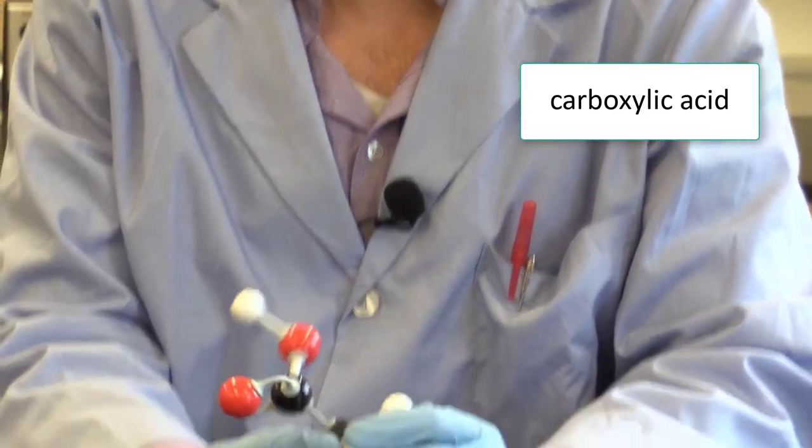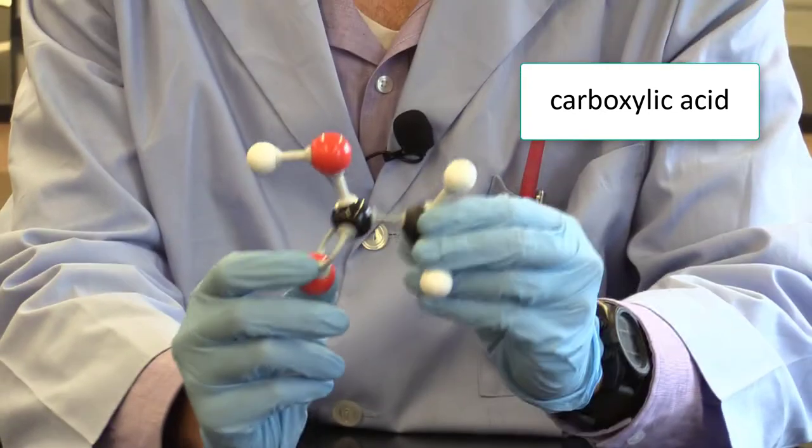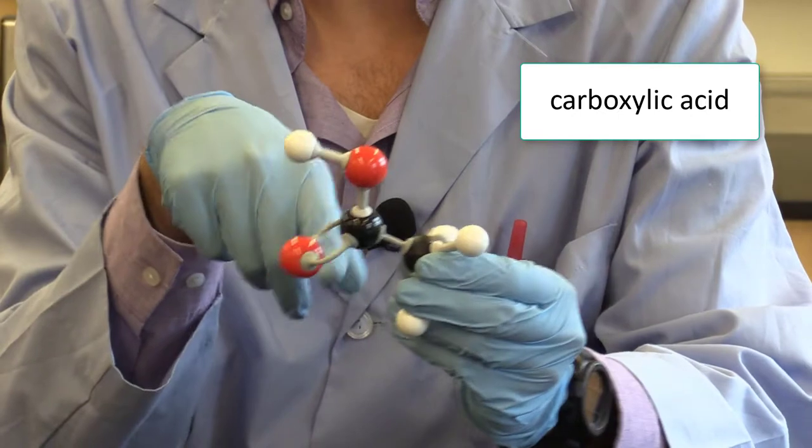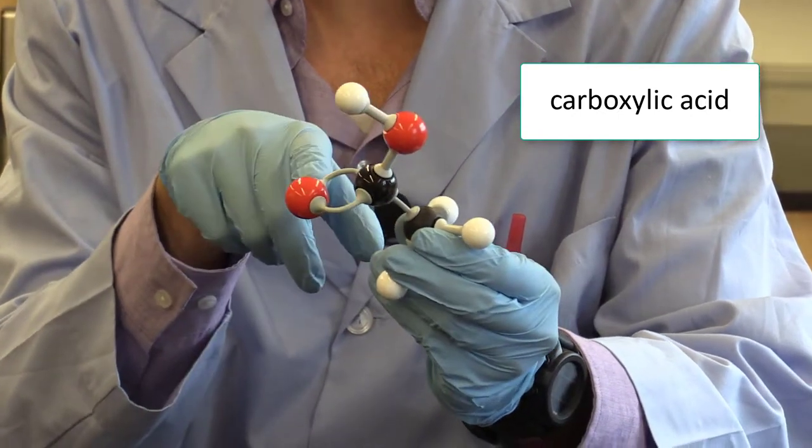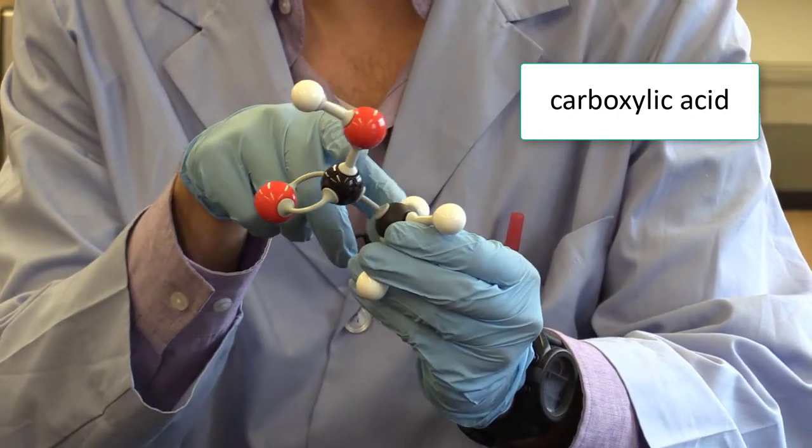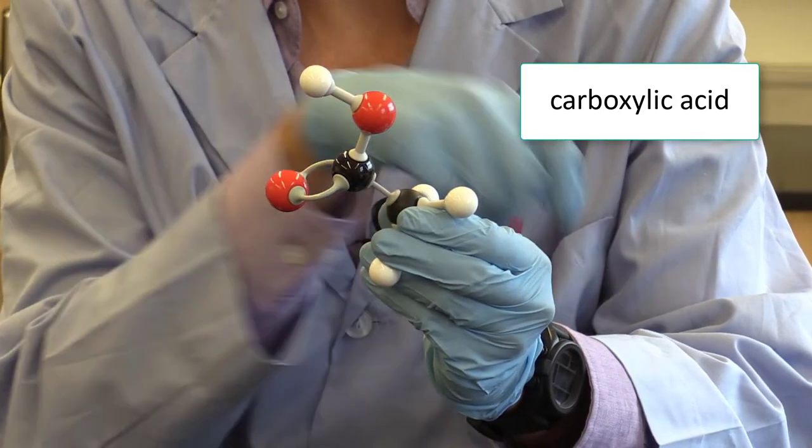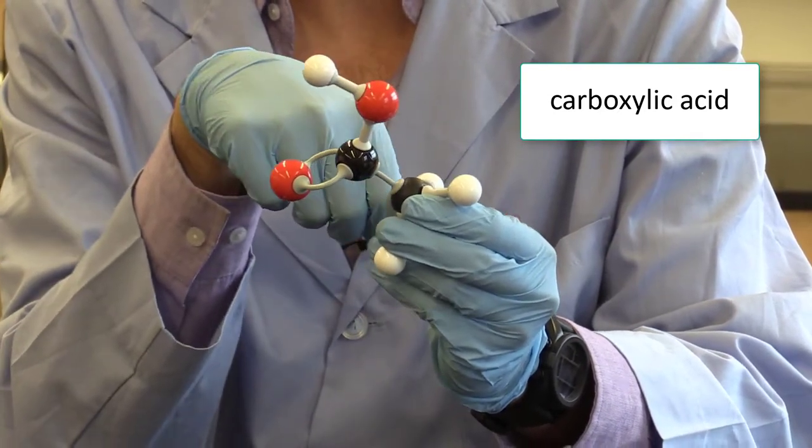Next is a carboxylic acid. Again, this too will also always be found on the end of a compound. So you have your carbon and it's double bonded to an oxygen, and then the carbon is also bonded to an oxygen and then the oxygen bonded to a hydrogen.